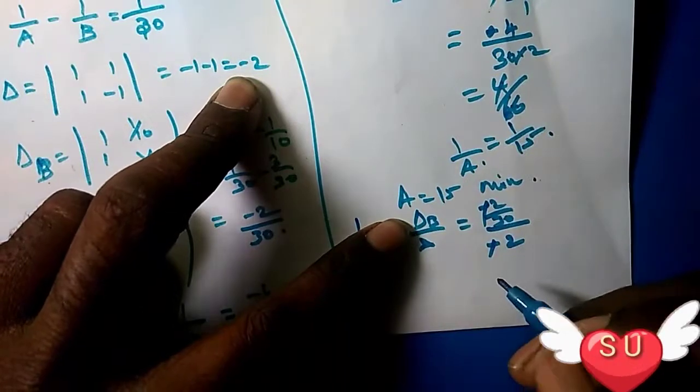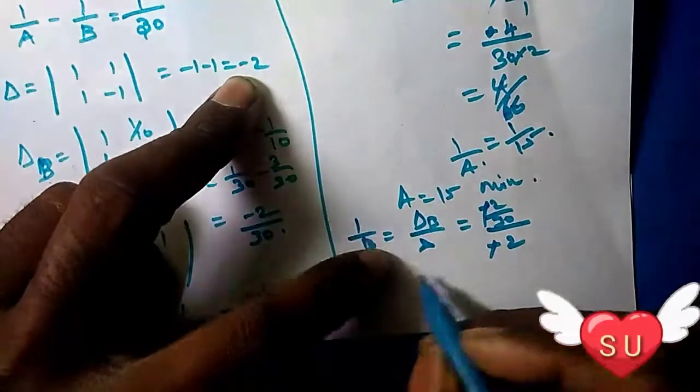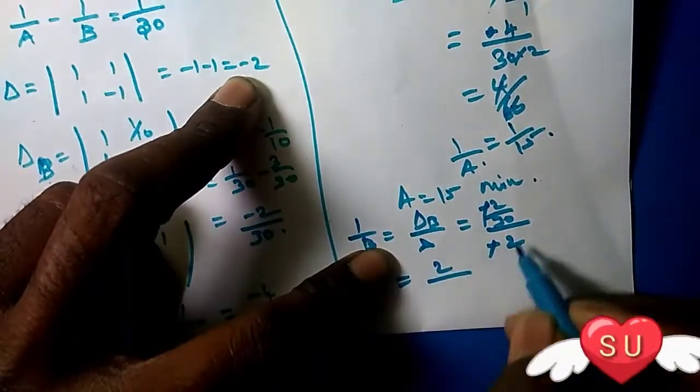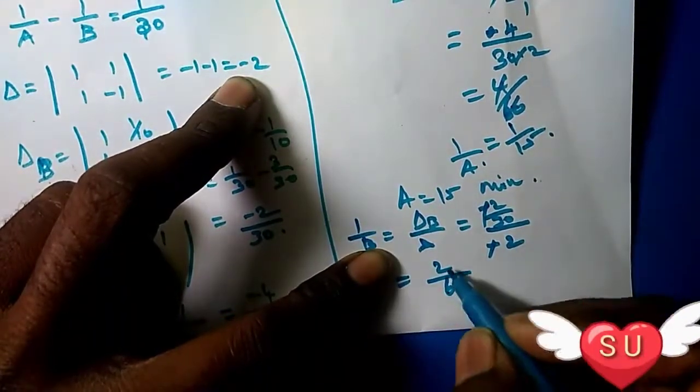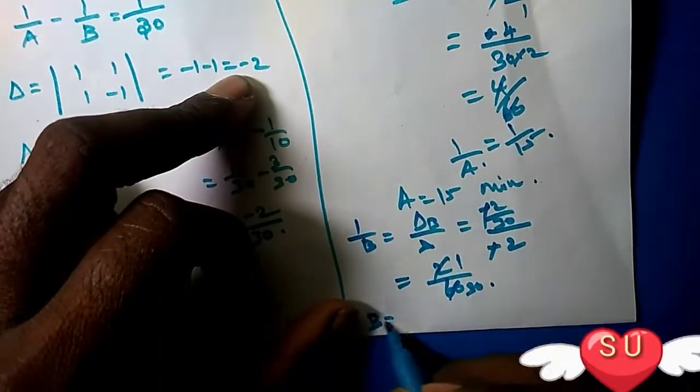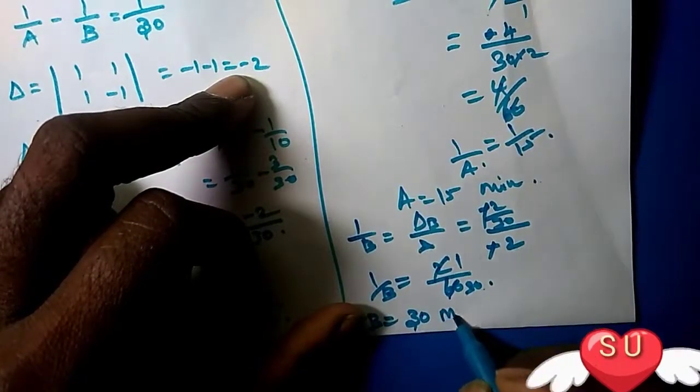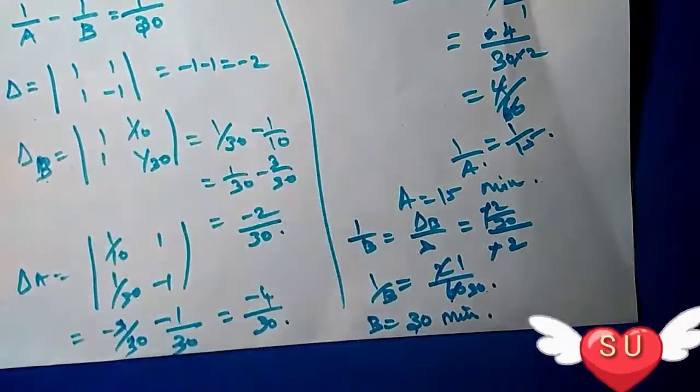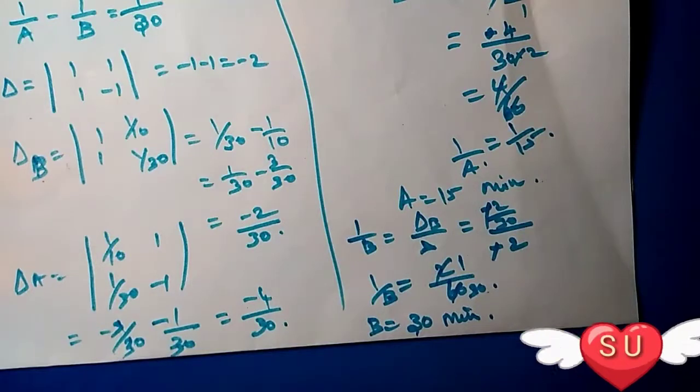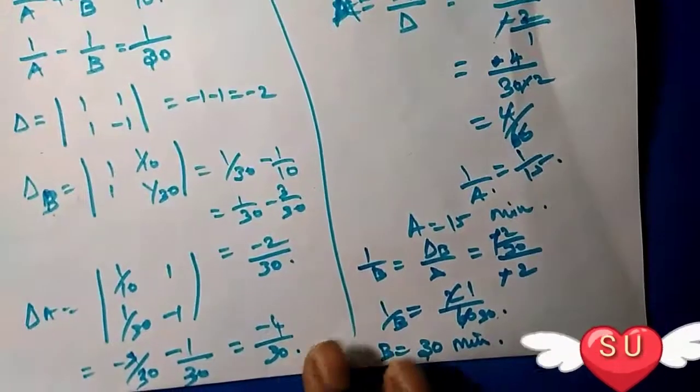Minus and minus cancel, giving us 2/60, which equals 1/30. So 1/B equals 1/30, and B equals 30 minutes. Therefore A takes 15 minutes and B takes 30 minutes.